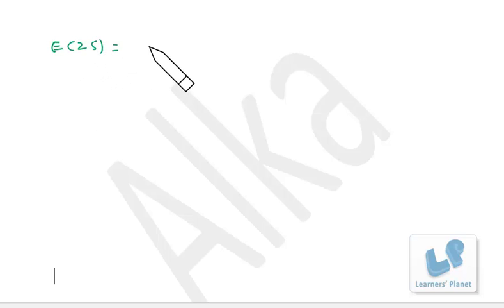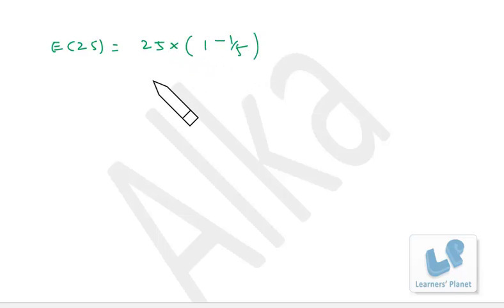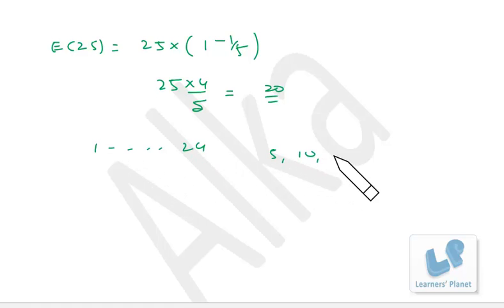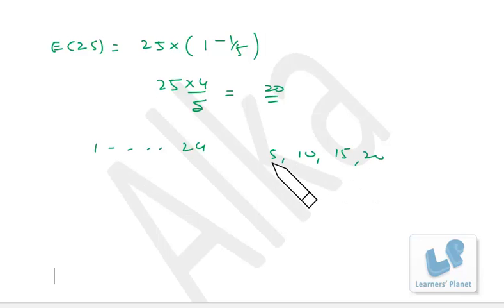Similarly, Euler number of 25: the prime factor is 5, so Euler(25) = 25 × (1 − 1/5) = 25 × (4/5) = 20. So there are 20 numbers less than 25 that are co-prime to 25. You can verify manually: from 1 to 24, only 5, 10, 15, and 20 are not co-prime to 25 — removing those 4 from 24 gives 20.